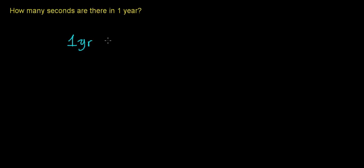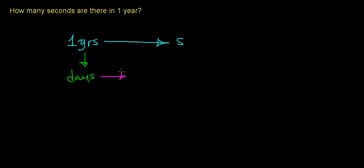In this video we're going to figure out how many seconds there are in one year, converting from units of years over to units of seconds. In order to make this conversion we first have to convert from years to days, then from days to hours, then from hours to minutes, and then from minutes to seconds.